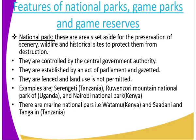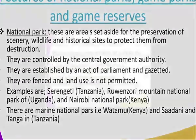Examples of national parks in East Africa: we have Serengeti, which is in Tanzania. We also have Rwenzori Mountain National Park, which is in Uganda. We have Nairobi National Park, which is in Kenya. There are also marine national parks. We have Watamu, which is in Kenya. We have Saandamu and Tanga, which are in Tanzania.